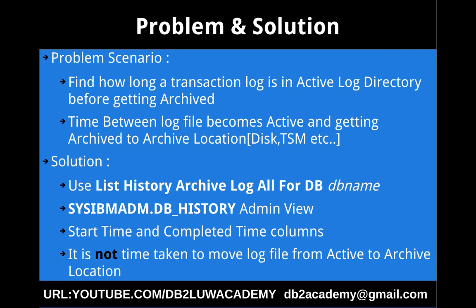You can also use the admin view DB_HISTORY — both are the same. There is a start time and end time column available. These columns will tell you when that particular archival — and that's what I mean by counterintuitive. When you look at the list history command, we tend to think that is the start time and end time for the archival process, but it is actually not. It is not the time taken to move the log file from the active log directory to the archive log directory. It actually reflects when that particular file became active and how long it stayed there until it got archived.